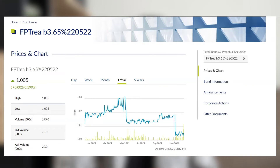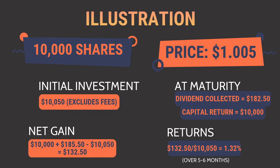Let me show you how to calculate the return. For example, you want to buy 10,000 shares of this bond at the price of $1.05, so your total capital outlay will be $10,050. Note that this cost excludes brokerage commission and fees, as brokerage commissions can range from as low as 0.08% to as high as 0.28%.